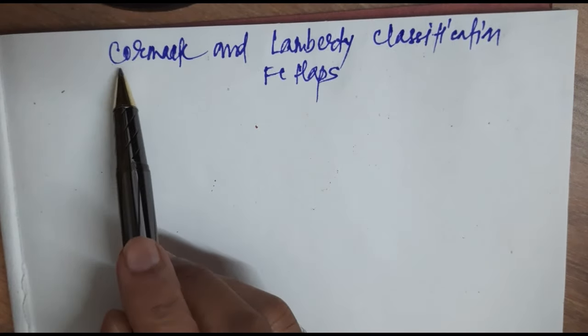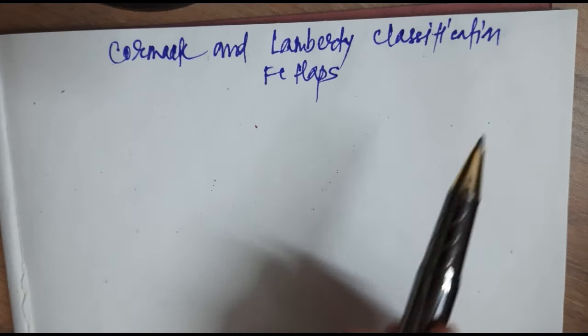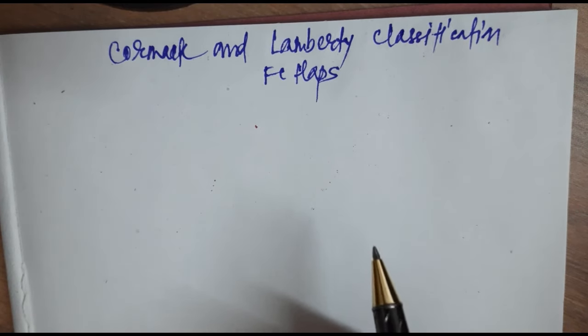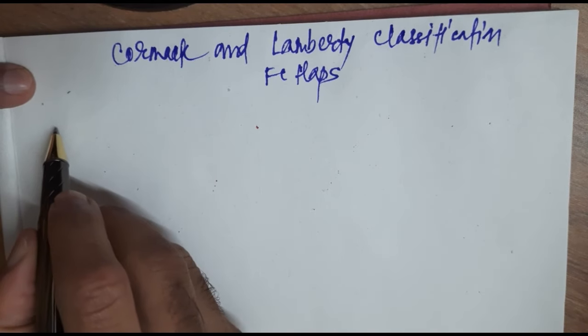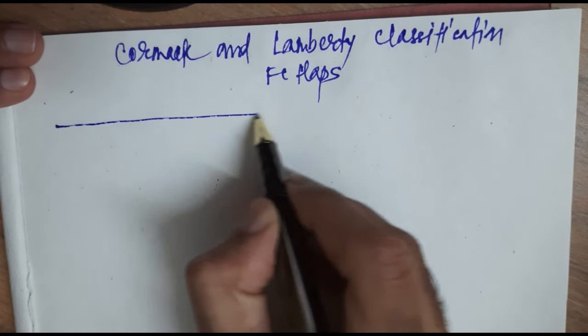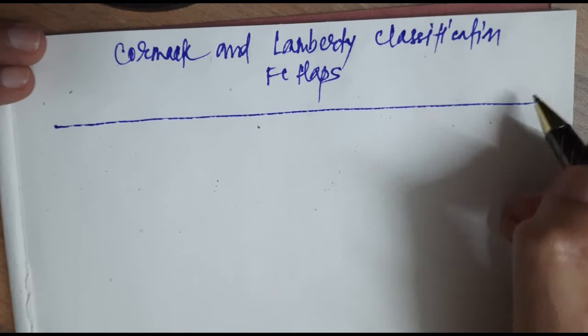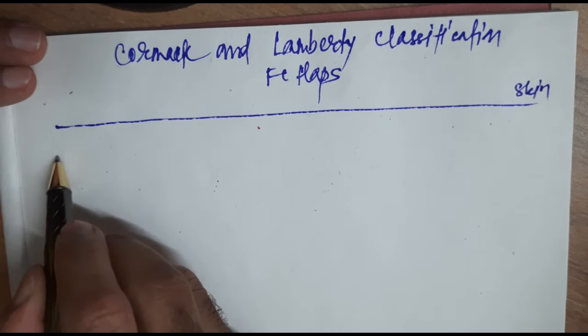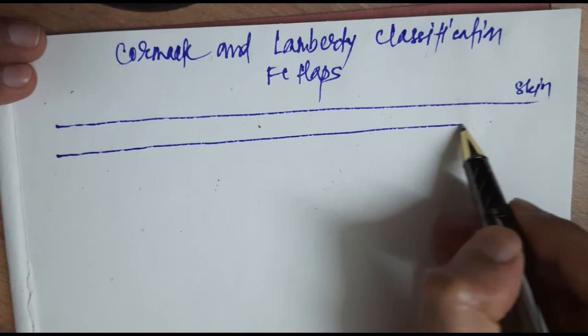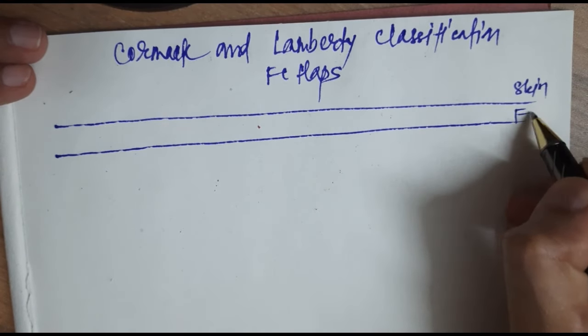In this video we will see the Cormack and Lamberti classification of fasciocutaneous flaps. We will first see the anatomical structures. This is the skin, and below the skin we have the fascia.